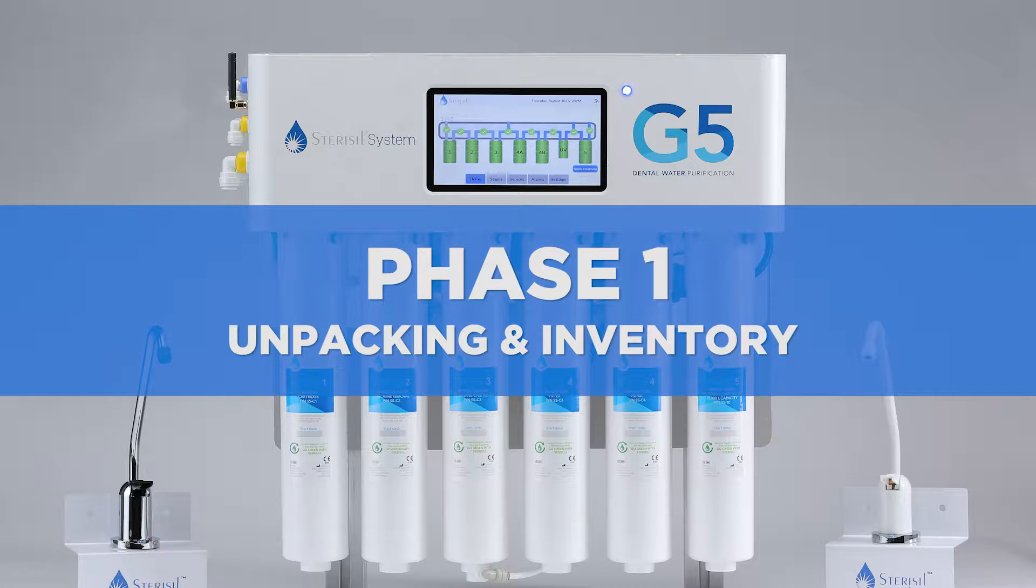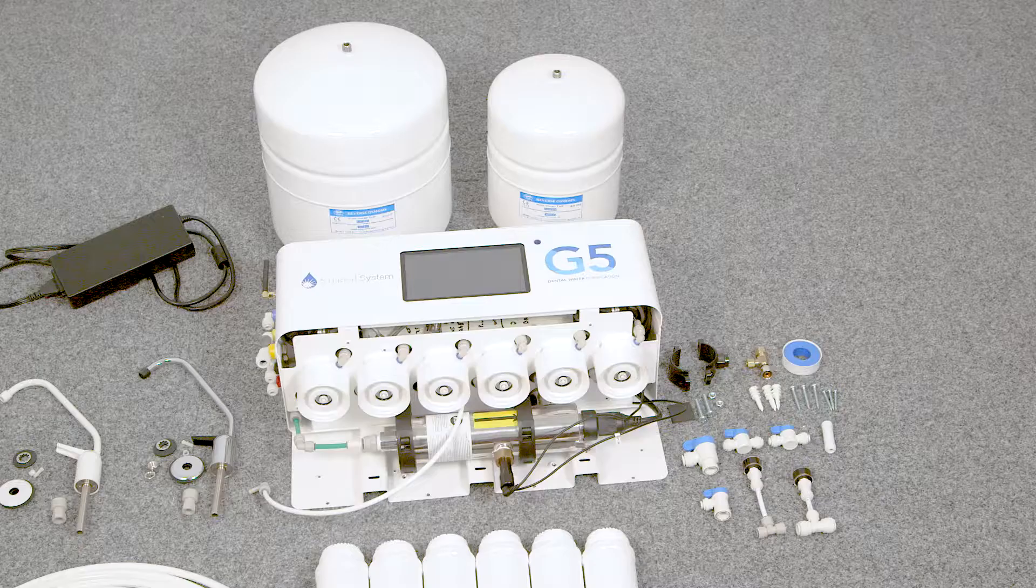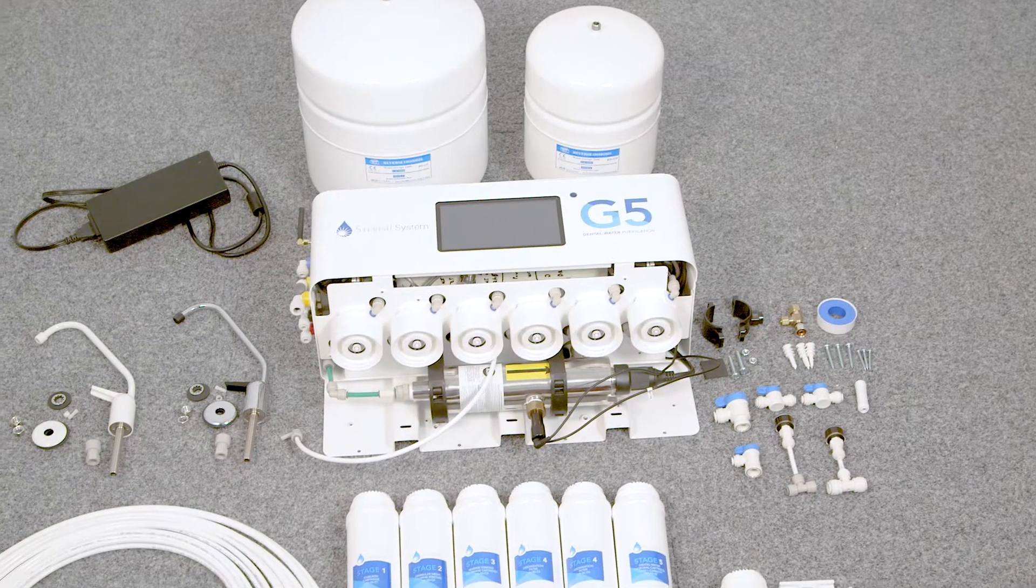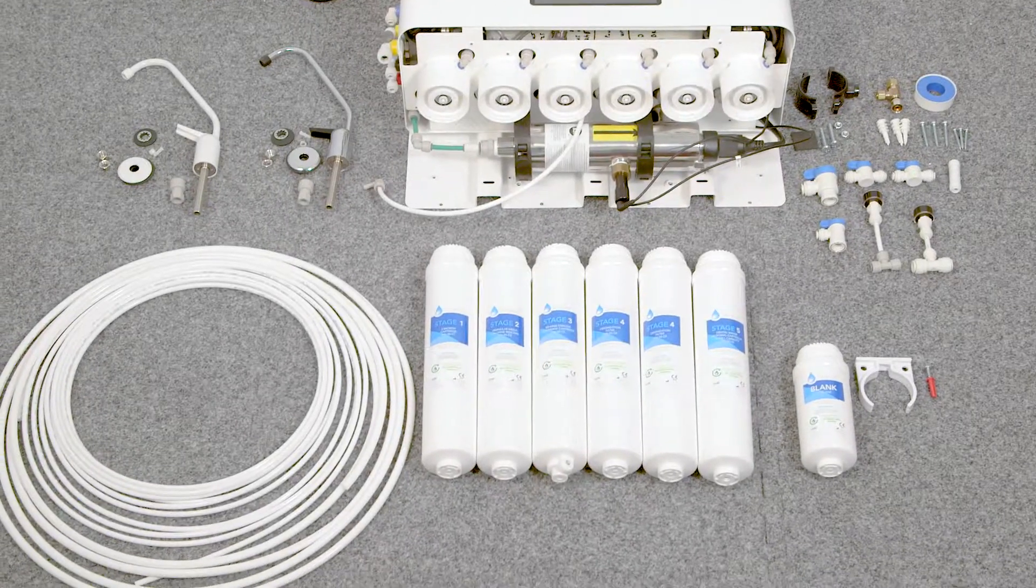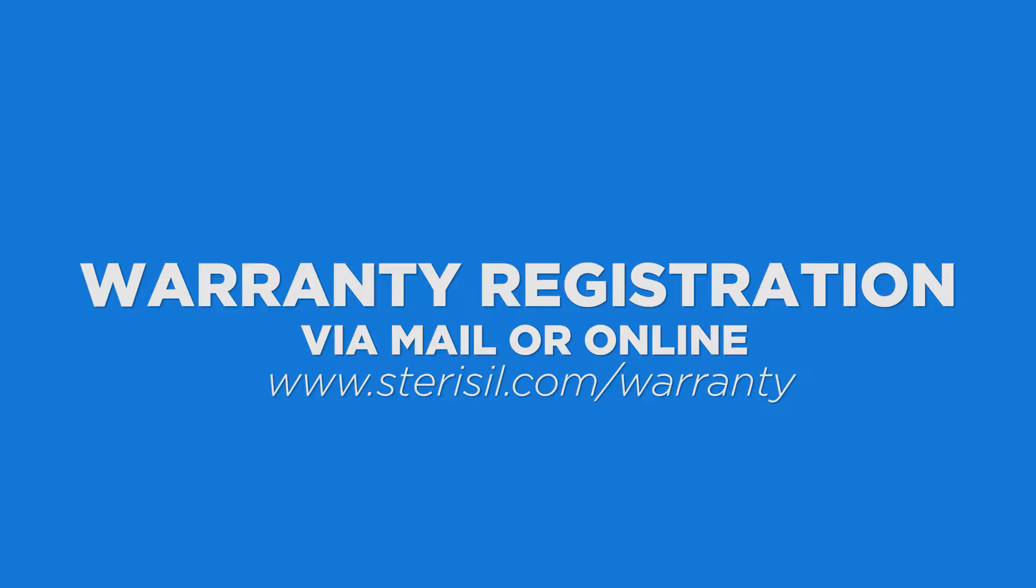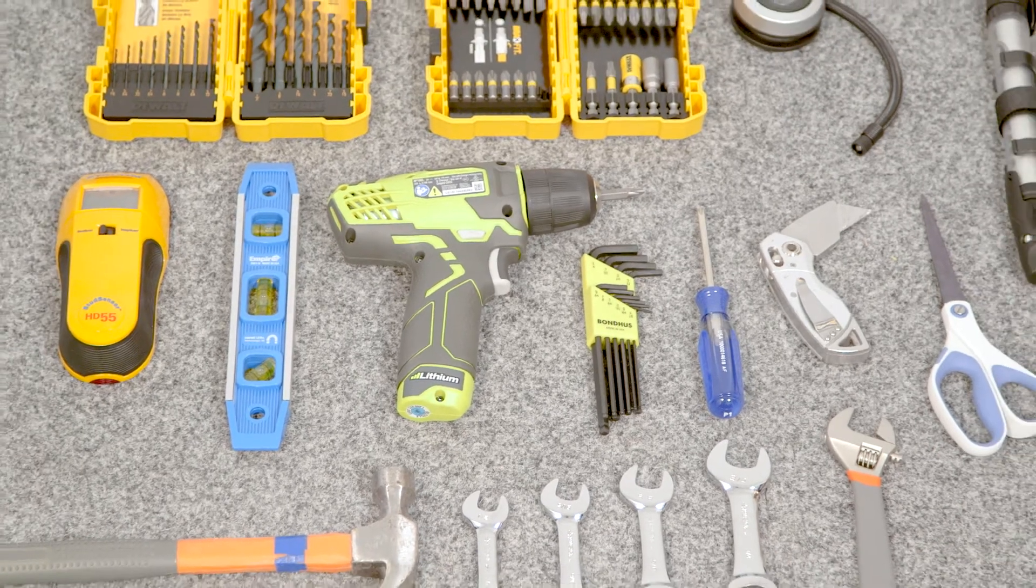Phase 1, unpacking and inventory. Start by unpacking and verifying the contents of each box and be sure to review the user manual. Please return the warranty registration form via mail or register online immediately upon installation. Next, gather up the list of required tools.